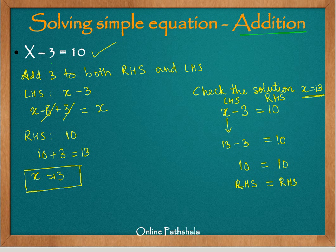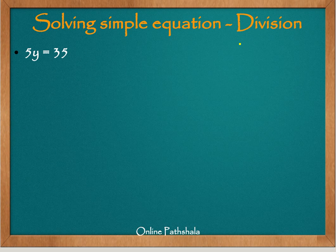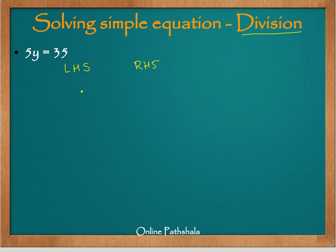Now let us look at another example where we use the division method. We have 5y equals 35. I'll be more concise now — this is the LHS and this is the RHS. The equation is 5y equals 35, and I want to find the value of y which satisfies this equation.